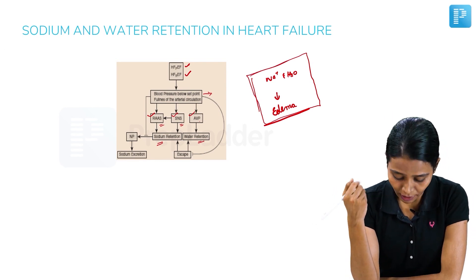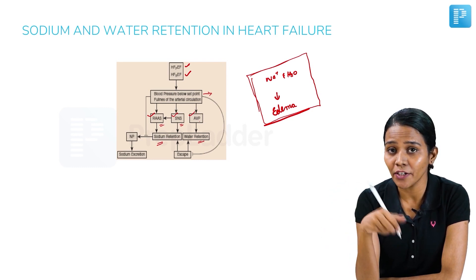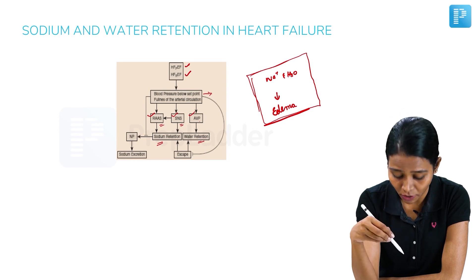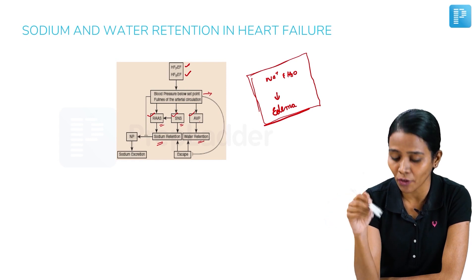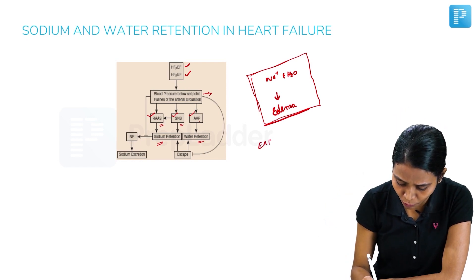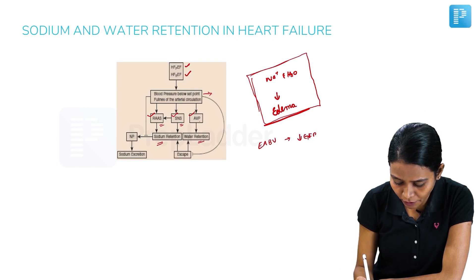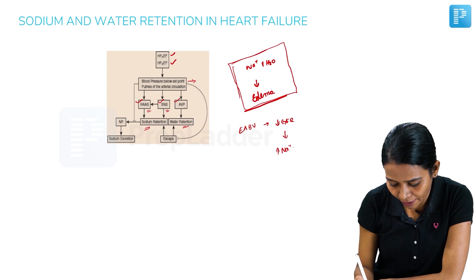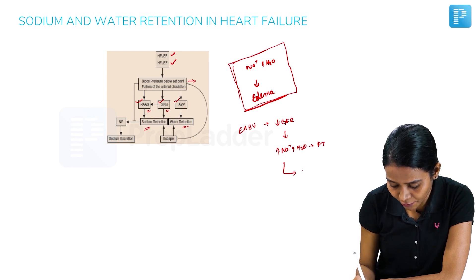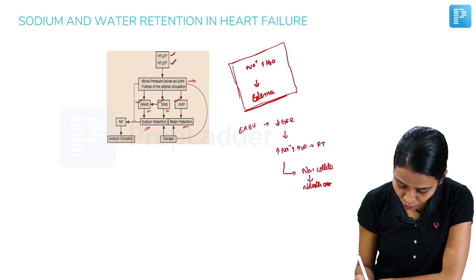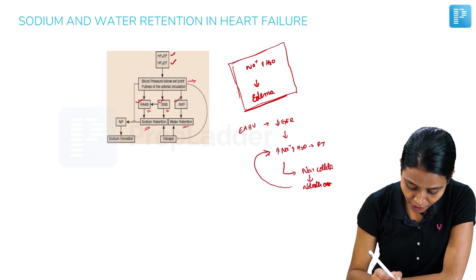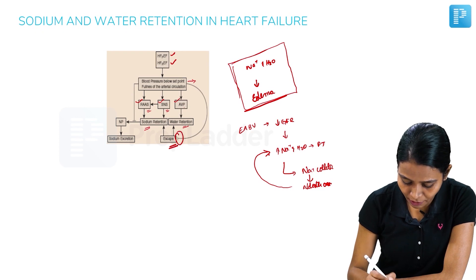The aldosterone escape mechanism does not work in this secondary hyperaldosteronism because the body never perceives the GFR as sufficient — the effective arterial blood volume remains low. So GFR is low and the body tries to increase sodium and water reabsorption in the proximal tubule. Whatever sodium is left over that reaches the collecting duct gets absorbed via aldosterone, since the renin-angiotensin-aldosterone system is also activated, further increasing sodium and water retention. So the aldosterone escape mechanism is inhibited and does not act.